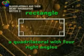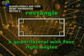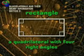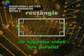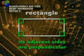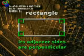A rectangle is a quadrilateral with four right angles. Because it has four right angles, its opposite sides are parallel, and its adjacent sides are perpendicular to one another.